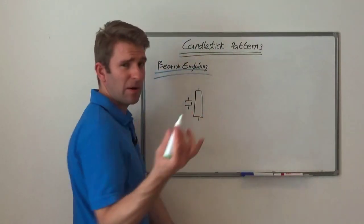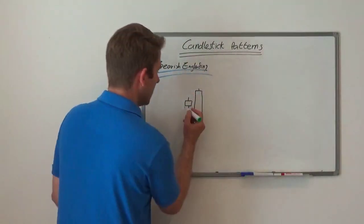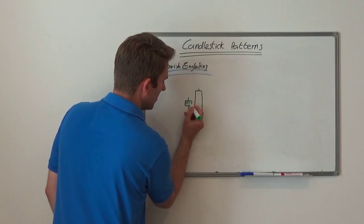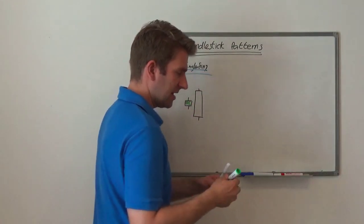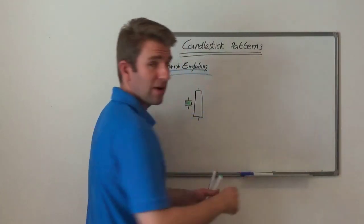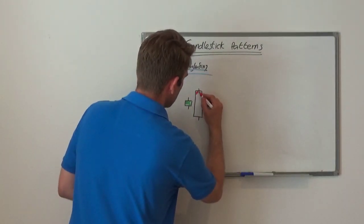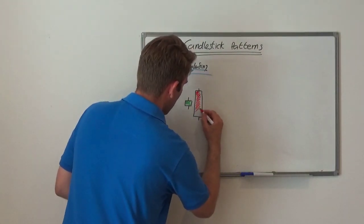I'm going to use standard green red color in here. Green is denoting that the candle has a green body, as in the close is higher than the open, and red denotes that the close is lower than the open. Pretty standard stuff. You may have them white or black depending on how you've got it.